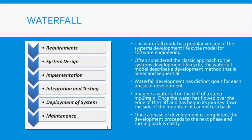In Waterfall, each phase has a distinct goal. At the requirements stage you gather and test requirements; at system design you produce a tested system design; at the integration and implementation stage there are also goals to achieve. The analogy I use is water falling off a cliff — once it goes over, it cannot go back. Similarly, in Waterfall, development starts from requirements, goes to system design, then implementation, then integration and testing.